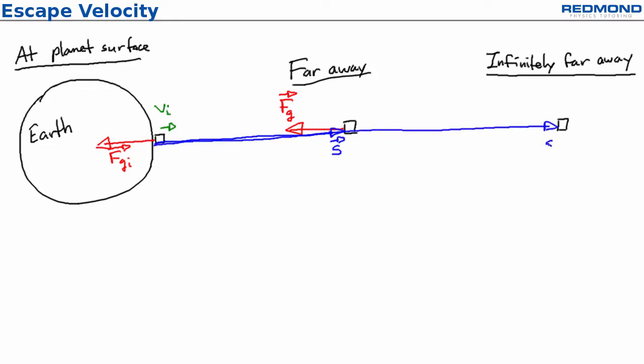The work done by a constant force is simply the force magnitude times the displacement times cosine of the angle between them. In this case, the angle is always 180 degrees and cosine of 180 is negative 1. Nice.